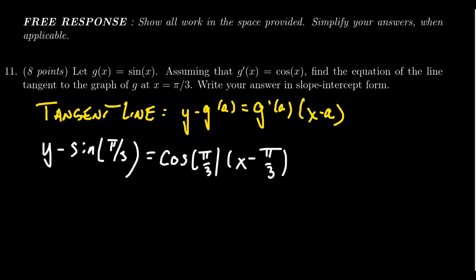So then we have to evaluate either by memory or using your calculator. We're going to evaluate sine of pi thirds and cosine of pi thirds. Sine of pi thirds—pi thirds, of course, is 60 degrees. This will be the square root of 3 over 2. Cosine of pi thirds is 1 half.